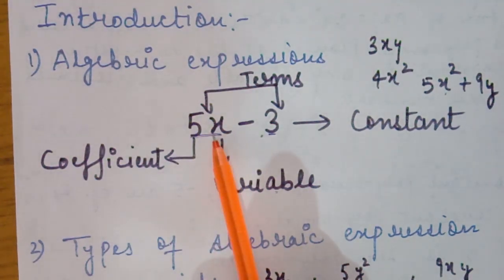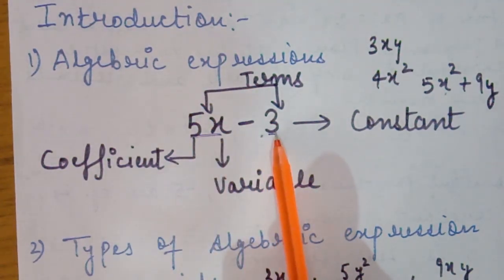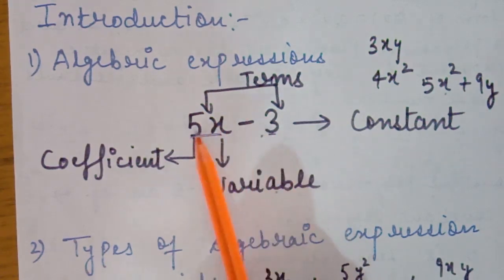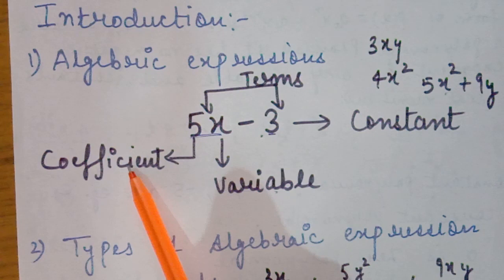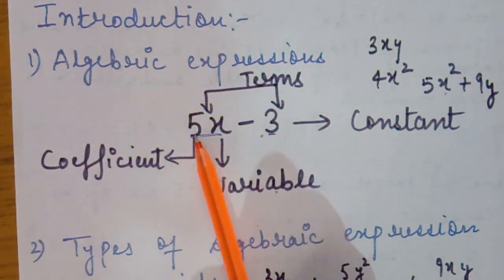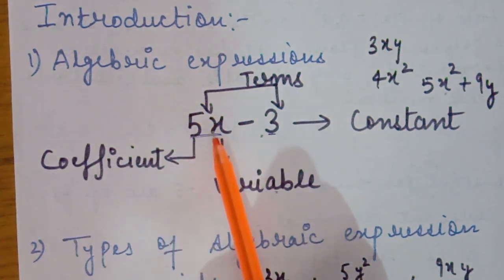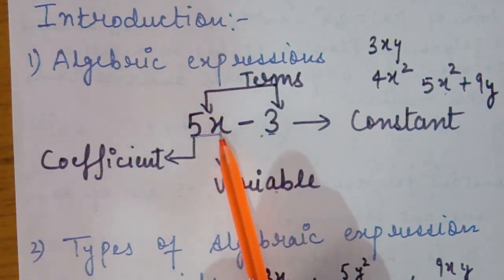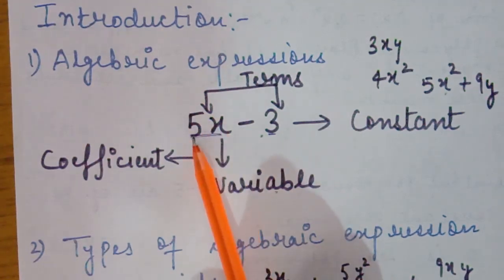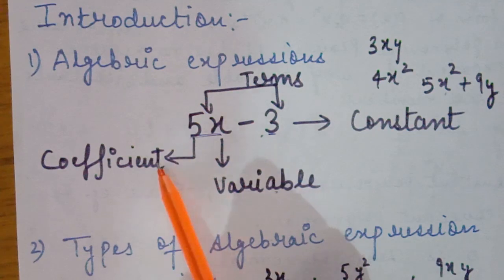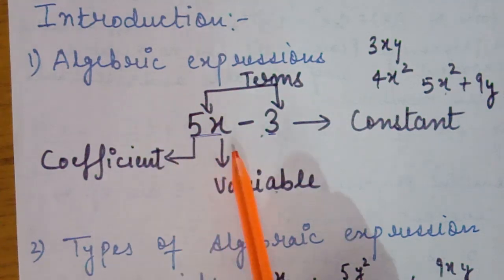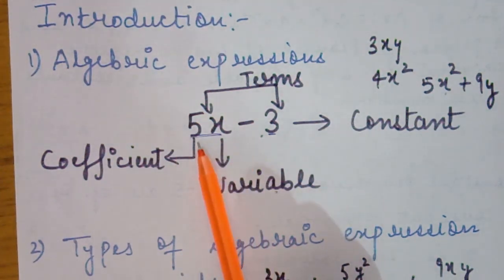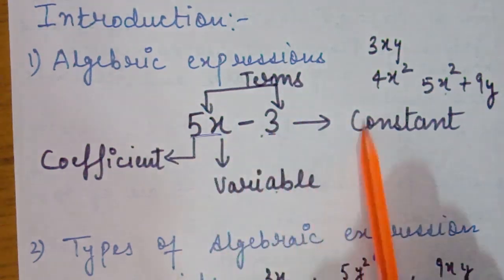Here 3 is representing a constant. Constants are those things whose value is fixed — they do not change. Next is the term. The variables and constants are connected with mathematical operations like addition and subtraction. Here we have subtraction, so 5x is the first term and 3 is the second term. In this expression we have two terms. Next is the coefficient — the fixed value present in front of a variable is called the coefficient.